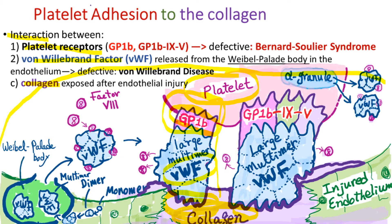Although GP1b is the main receptor for von Willebrand factor, the bonding is not strong enough to sustain the high shear stress from rapid blood flow. So GP1b forms a stronger GP1b-IX-V complex by linking GP9 and GP5. The bonding between the GP1b-IX-V complex and von Willebrand factor is then much stronger.